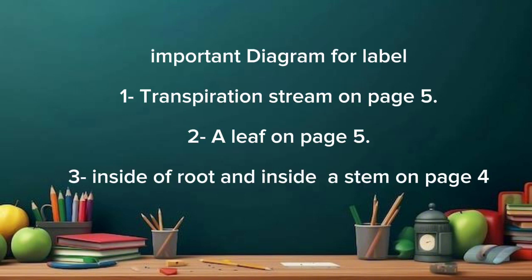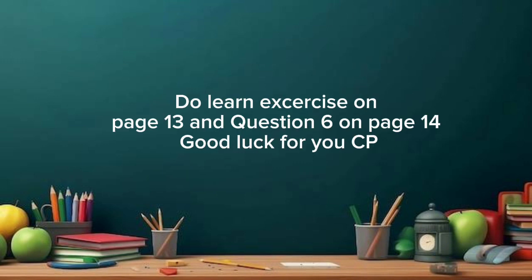Important diagrams to label: number one, the transpiration stream on page 5; number two, a leaf on page 5; number three, inside of root and inside a stem on page 4. Do learn the exercise on page 13 and question 6 on page 14.